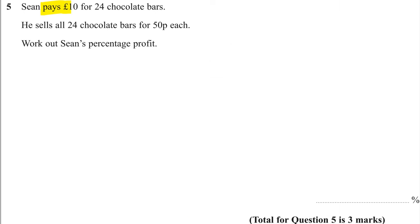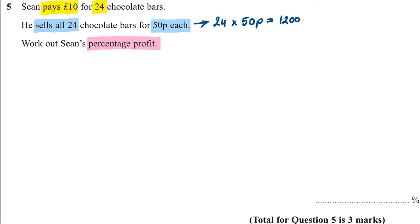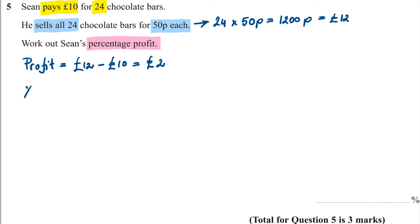Question 5. Sean pays £10 for 24 chocolate bars and sells all 24 for 50p each. Work out Sean's percentage profit. Total sales: 24 times 50p is 1200p, which equals £12. The profit is £12 minus £10, which is £2. The percentage profit is 2 out of 10 times 100, which is equal to 20%.